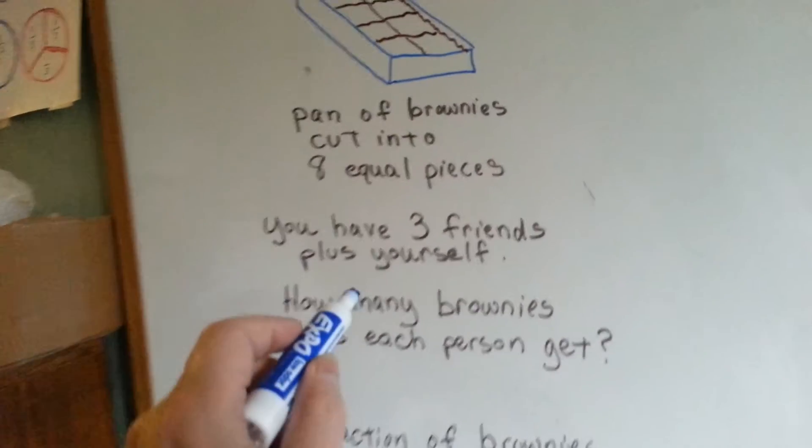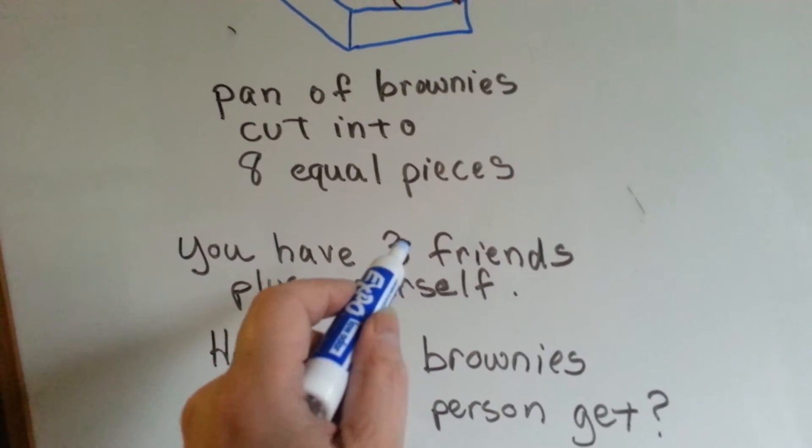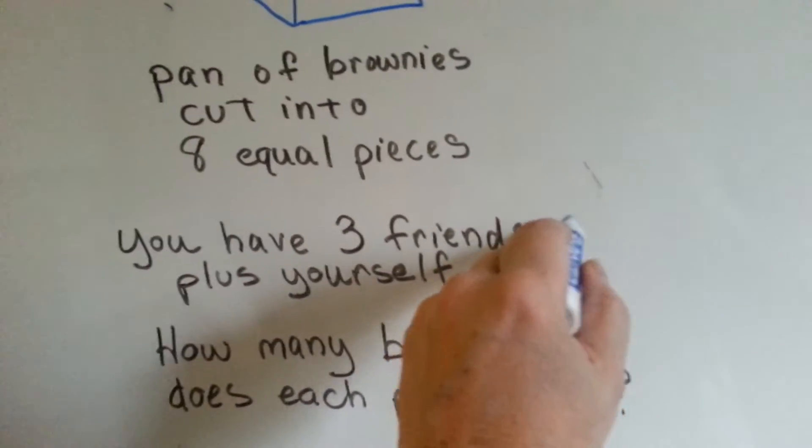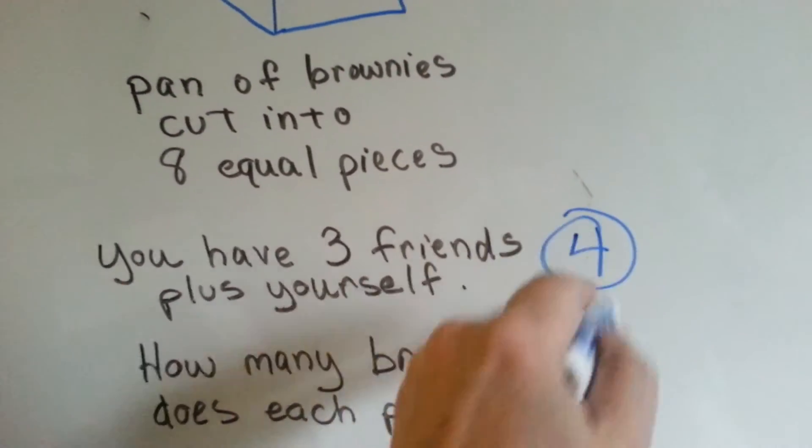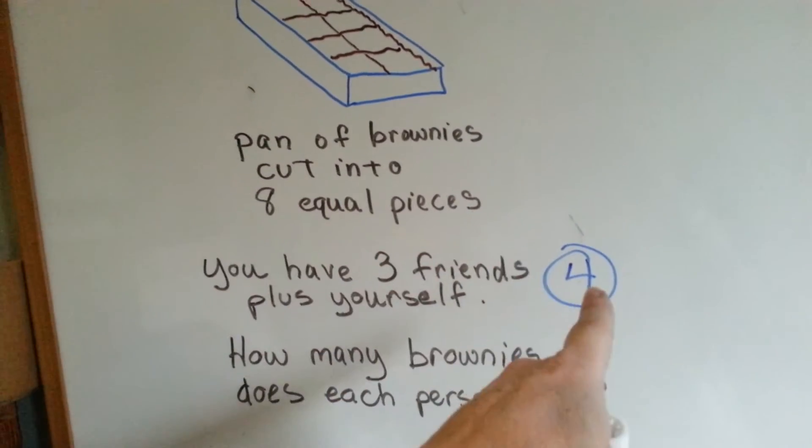How can you split this pan of brownies with yourself and three friends? Well, how many people is that? Three friends plus you. Three plus you is one more person, so that's four people.